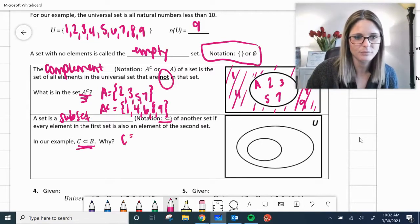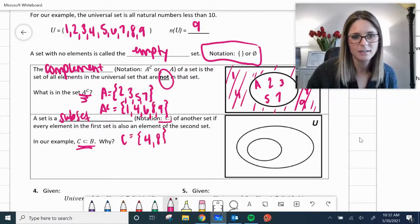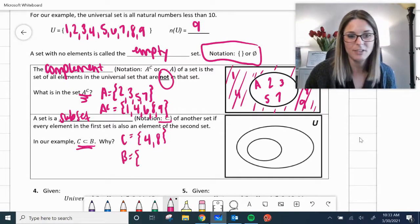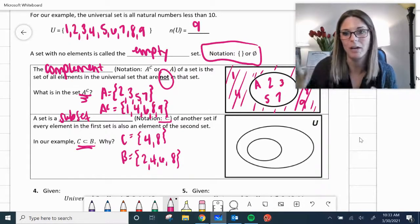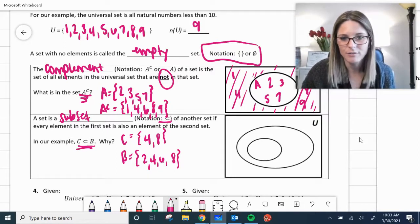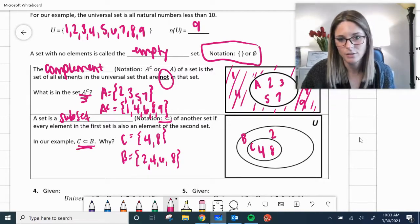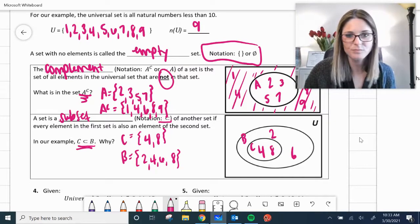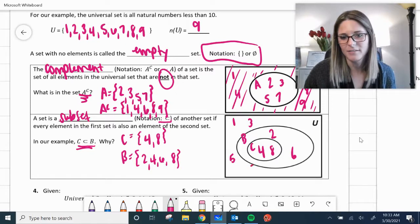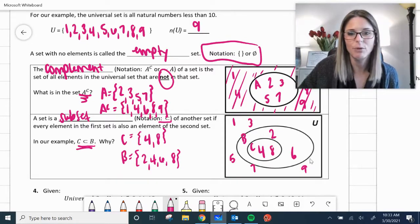Well, what was C? C was 4 and 8, the multiples of 4. B was all the even numbers less than 10. So you can see visually, C has 4 and 8, and it's a subset of B. B had 4 and 8. If we wanted to visualize it, you have C, you had 4 and 8. In the set of B, you also had 2, 4, 6, and 8, and then universal everything else. 1, 3, 5, 7, and 9 would be the rest of the universal. So there's a visual for that in Venn diagram form subset.